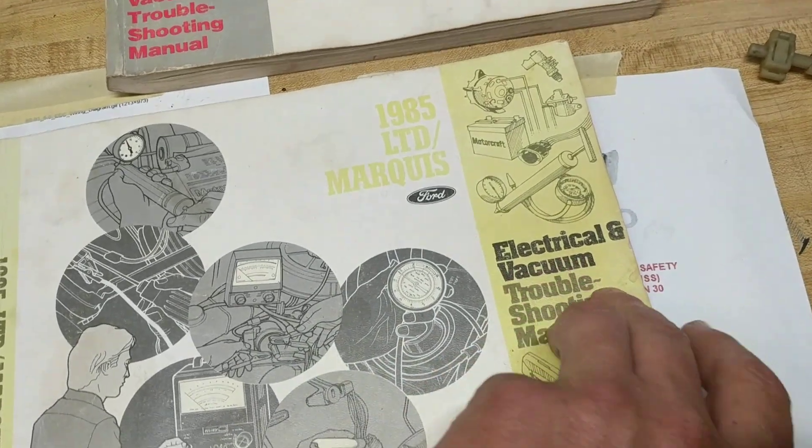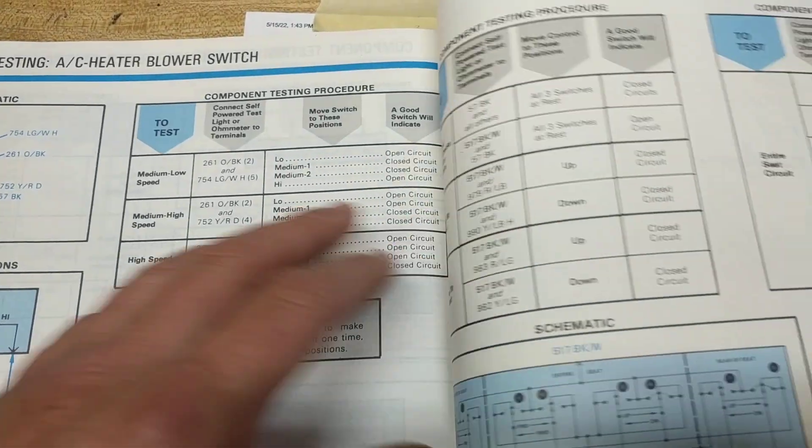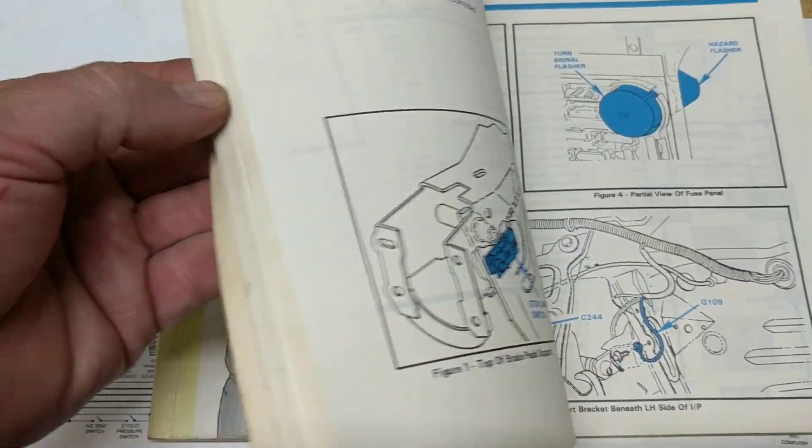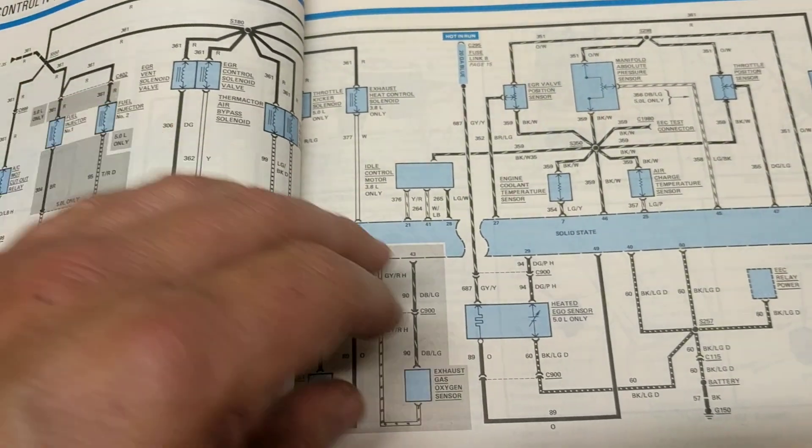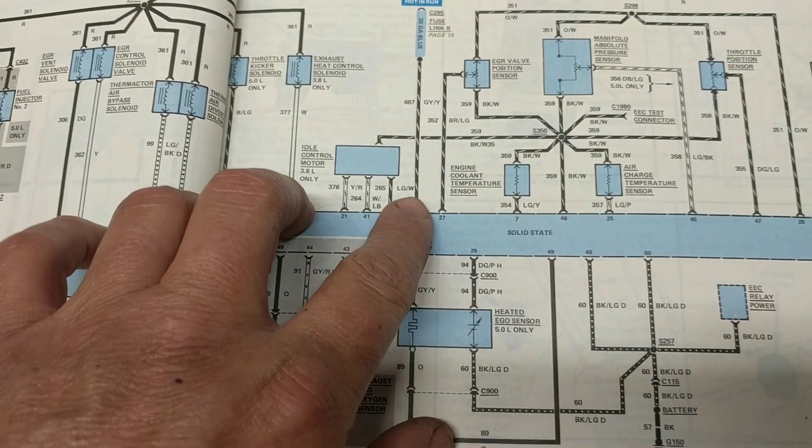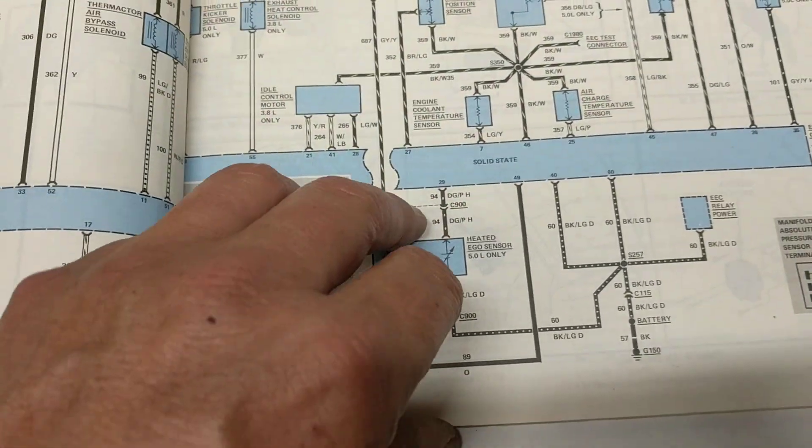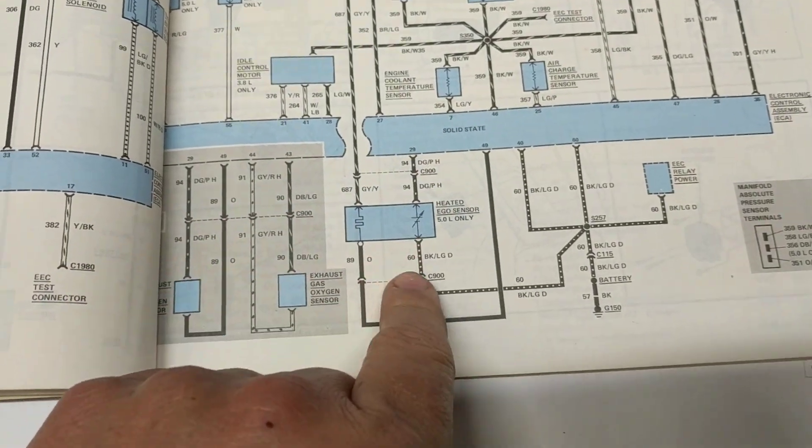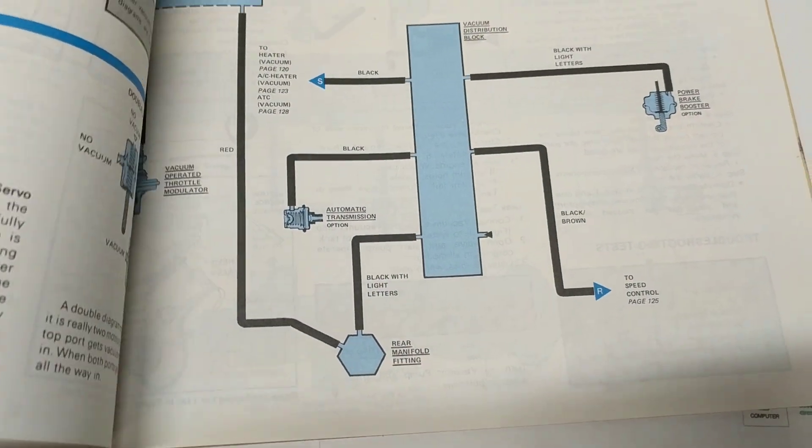This is called a Helm manual, electrical and vacuum troubleshooting. They're made by, I think it was Helm. You can't find them anymore or buy them new. You got to get them on eBay or Amazon. And the thing about them is they have all of the connectors, all the wiring, you know, the color where it goes and all that. And you can look like you got a certain connector you want to try to find. It'll tell you where it's at. And then here in the back, it's got what each of the connectors do.